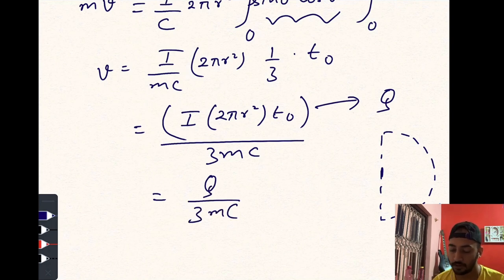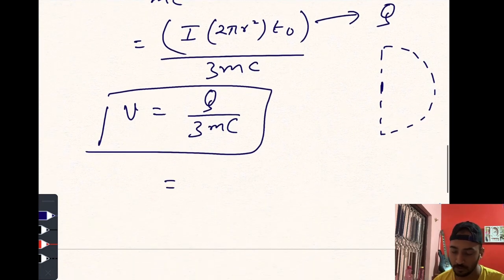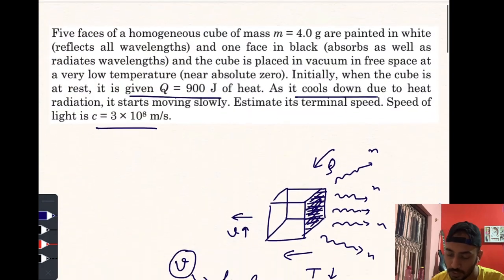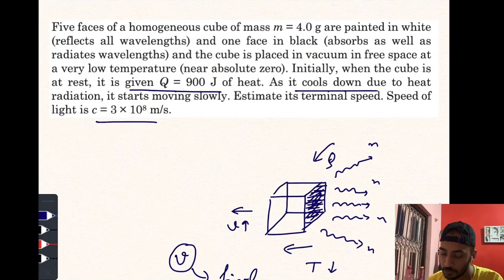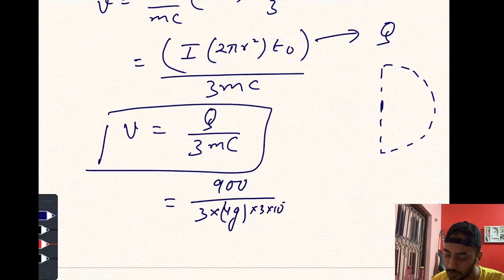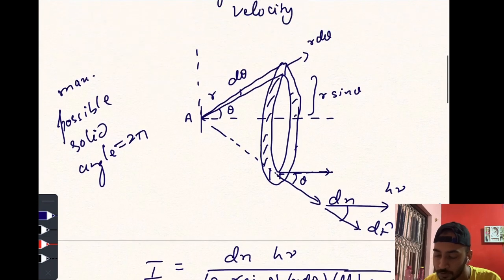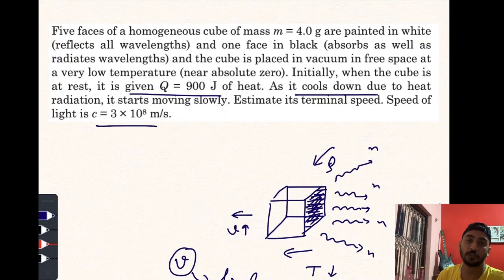Now if you just put the values given in the question, that is Q = 900 joule, mass is 4 gram, so 900 joule divided by 4 gram into 3 × 10^8, you would get 1/4, that is 0.25 millimeter per second. So this would be your final answer. I hope you all have found this video helpful and informative. If you like this video, please do subscribe and share it with your friends. God bless you, peace!